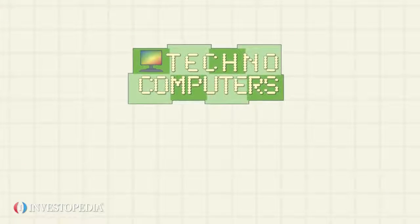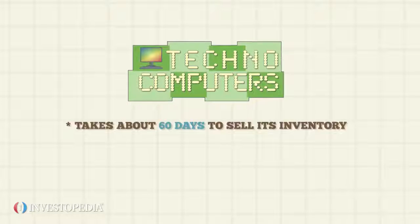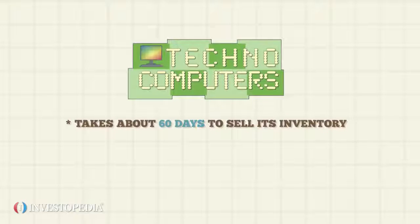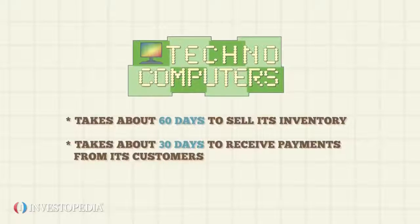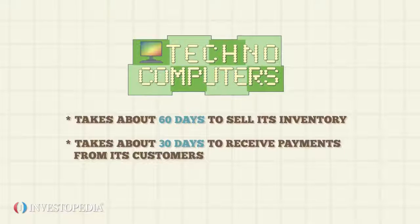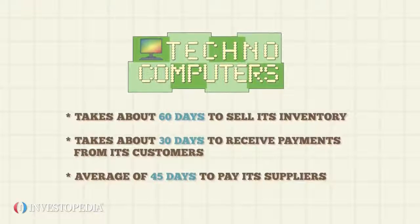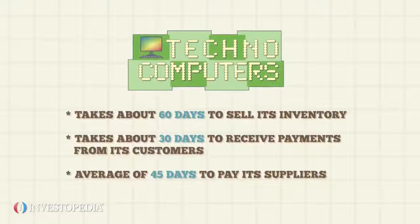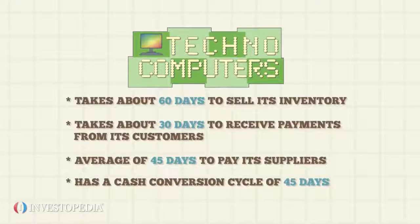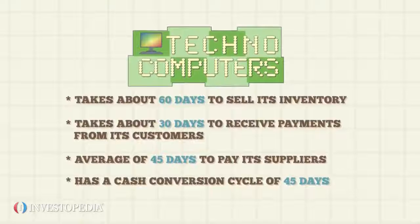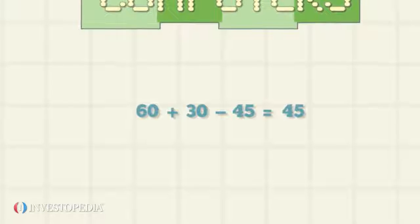Techno Computers, a high-tech computer manufacturer, takes about 60 days to sell its inventory. It takes about 30 days to receive payments from its customers for the product sold, and it takes an average of 45 days to pay its suppliers. This means that Techno Computers has a cash conversion cycle of 45 days: 60 plus 30 minus 45.